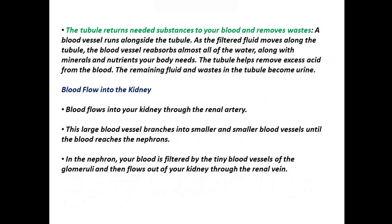Now let's check out how blood flows into your kidney. Blood flows into your kidney through the renal artery. This large blood vessel branches into smaller and smaller blood vessels until the blood reaches the nephrons. In the nephron, your blood is filtered by the tiny blood vessels of the glomeruli, and then flows out of your kidney through the renal vein. So finally the discussion of kidney is over.